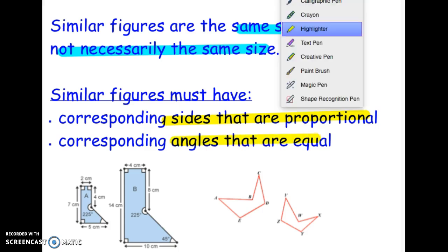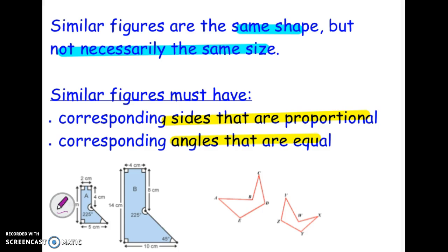When you're having corresponding sides that are proportional, the sides that correspond go together. For example, in this figure on the left, 2 and 4 would correspond to each other. That ratio, 2 to 4, equals one-half.